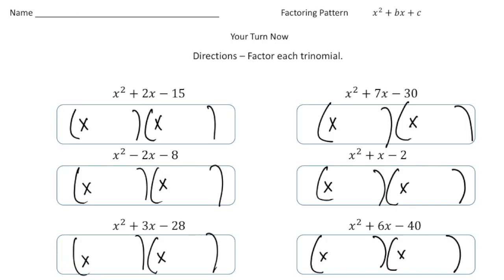All right, welcome back. Let's see how you did on these practice problems. Our goal is to factor every one of these trinomials — we want to know what times what gives us the trinomial. Every one of these problems started off with an x squared, so you know that each binomial is going to be an x and an x. For the first one, what times what gives us negative 15, but then adds up to 2? That would be a plus 5 and then a minus 3.